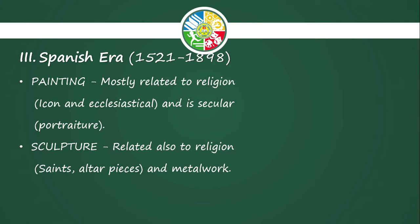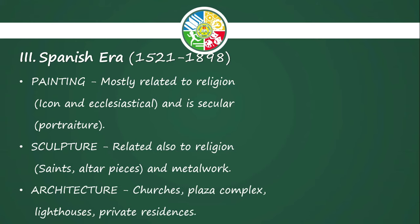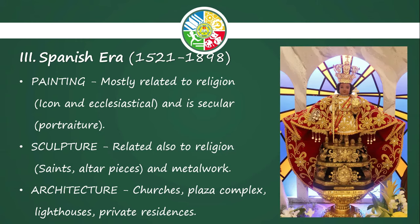Sculpture during the Spanish era is also related to religion: saints, altar pieces, and metalwork. Architecture includes churches, plaza complexes, lighthouses, and private residences. The main point of the Spanish era is to spread the three G's: God, gold, and glory — with God being the most important objective. The most famous contribution of the Spanish era used as an example here is the Santo Niño.